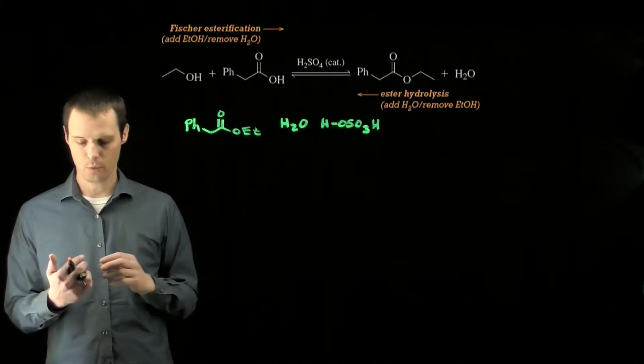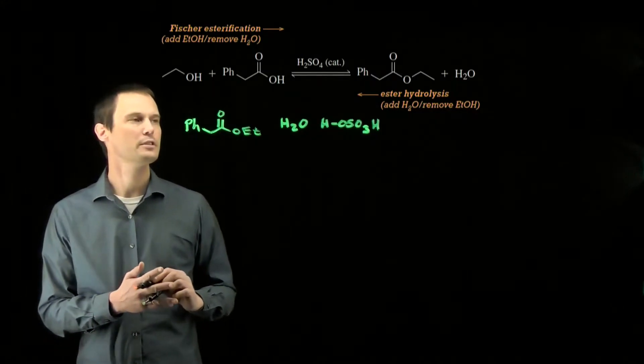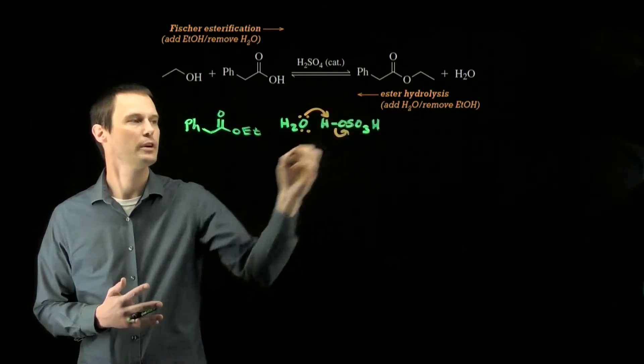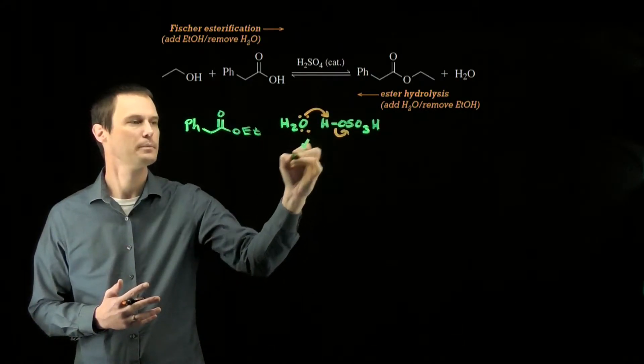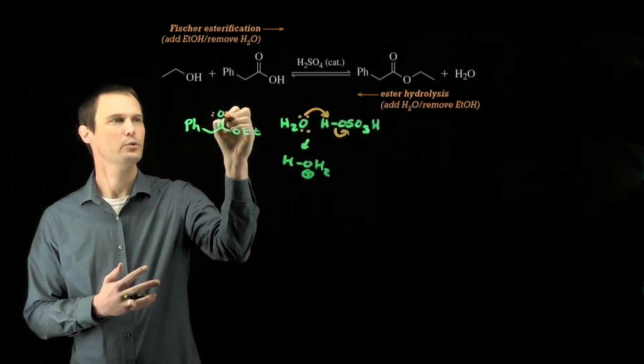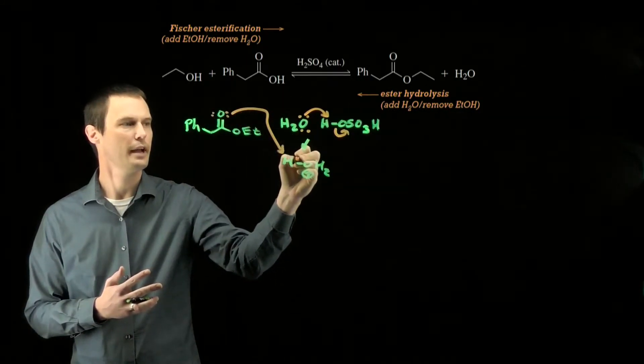So if we start with our ester, water, and sulfuric acid, the first step of this mechanism will be the protonation of water by sulfuric acid to form H3O+. That proton will then get transferred to the carbonyl of the ester in an acid-base reaction.